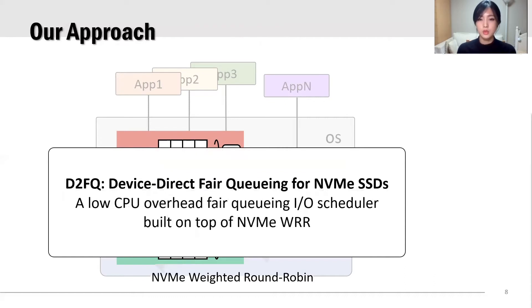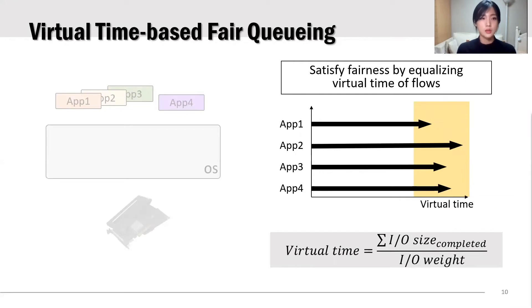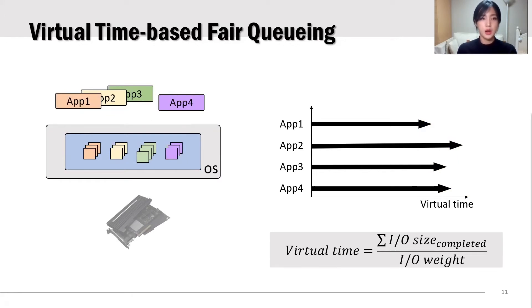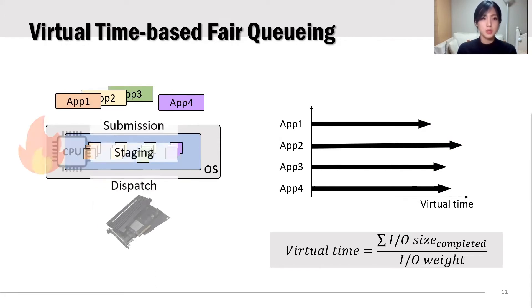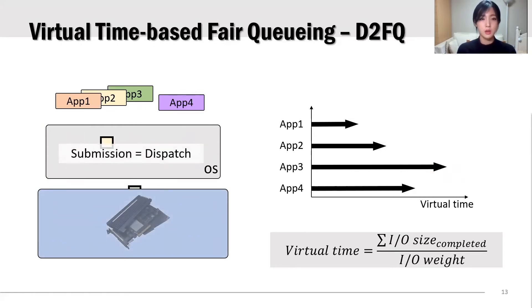We propose G2FQ, which is a low CPU overhead fair queuing I/O scheduler built on top of NVMe WRR. Like other fair queuing I/O schedulers, G2FQ is virtual time based. It keeps track of the virtual time of each flow and tries to equalize the virtual time of all active flows in a system. Conventional fair-share I/O schedulers do this by taking three steps in the I/O scheduling layer: submit, stage, and dispatch. However, in G2FQ, once applications submit an I/O request, it is directly dispatched to an SSD. As a result, G2FQ performs minimal operations in the block layer, so it saves CPU cycles.